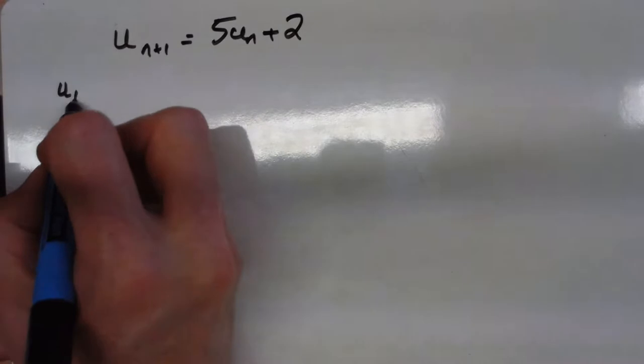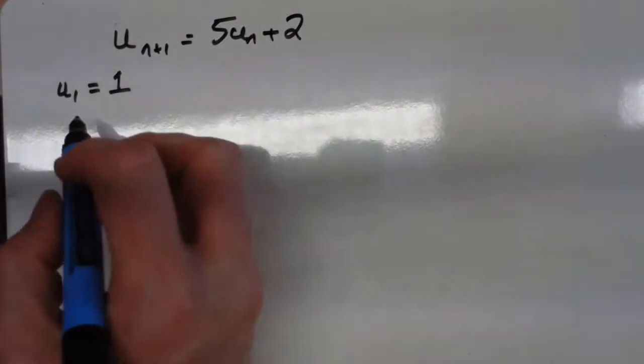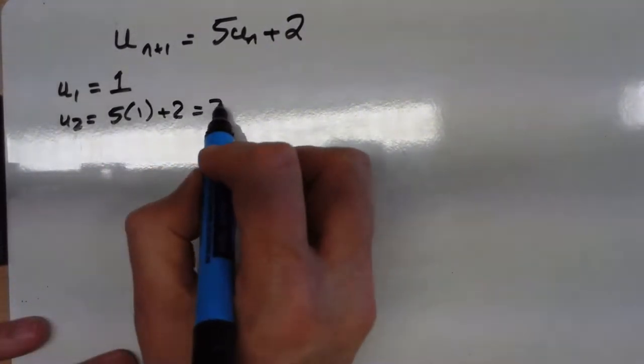So we've got a recurrence relation here, and we're told that the first term of this is equal to 1. So when you put the 1 in there, the second one of these will be 5 lots of 1 add 2, which is 7.